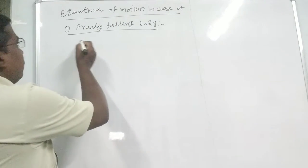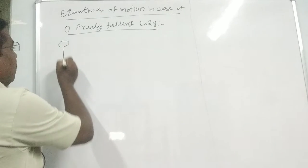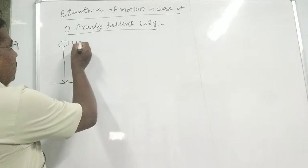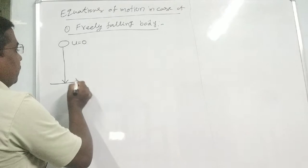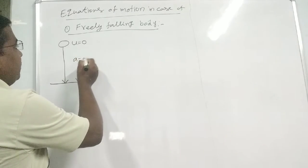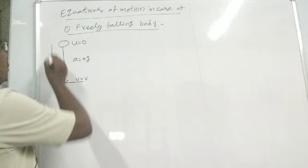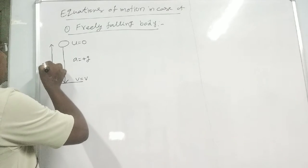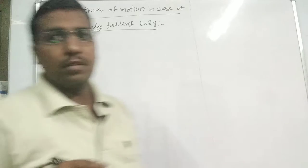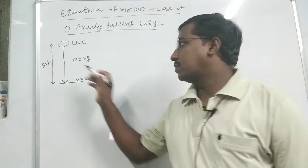For the first equation of motion, we consider an object freely falling from a certain height and it reaches the ground. Its initial velocity U = 0, its final velocity is V, its acceleration is +g, and the height travelled is S = H — that is, the maximum height is H.